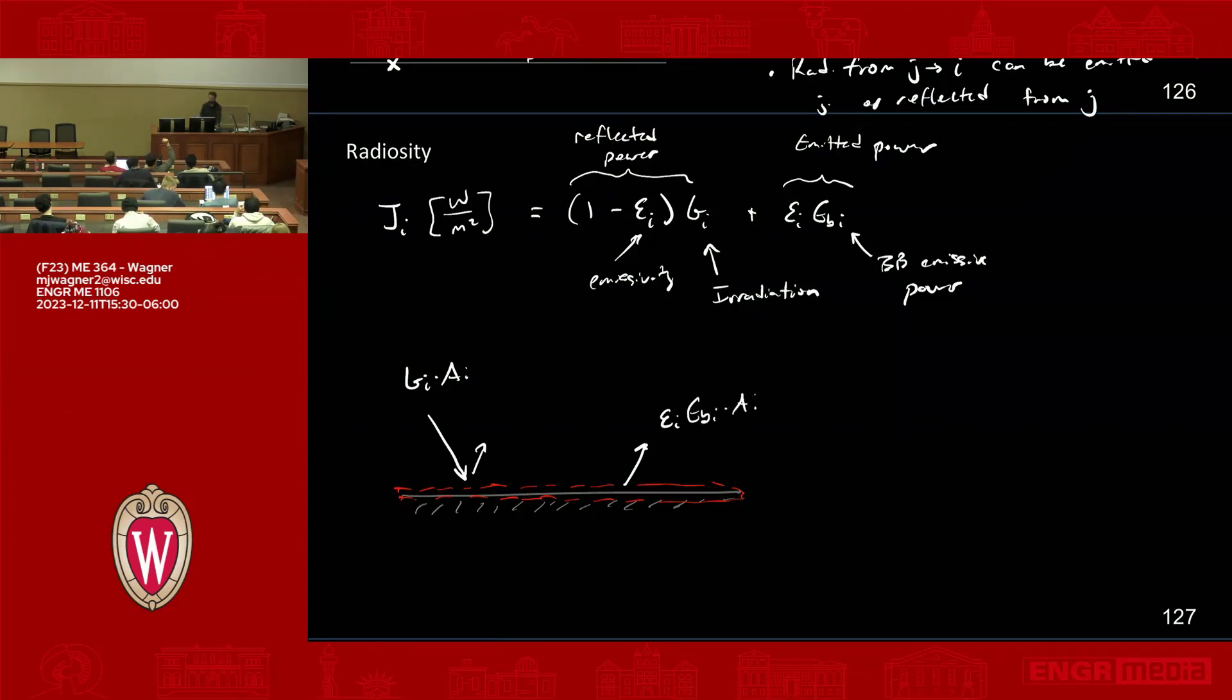So some of that's going to be reflected. And then you have what's emitted. So this is epsilon i times ebi times ai. We could also have maybe heat transfer across the surface. So heat transfer across the surface here would be some q dot i.